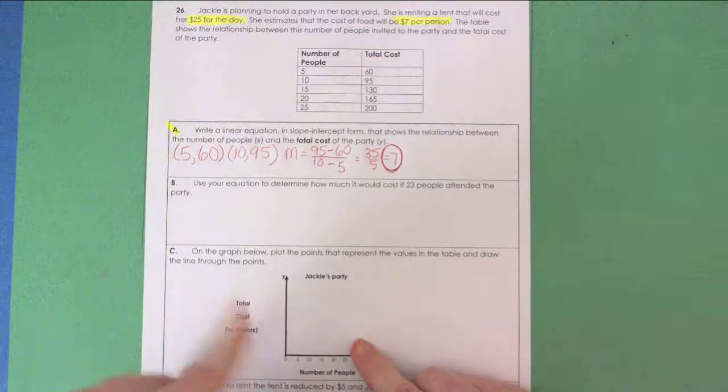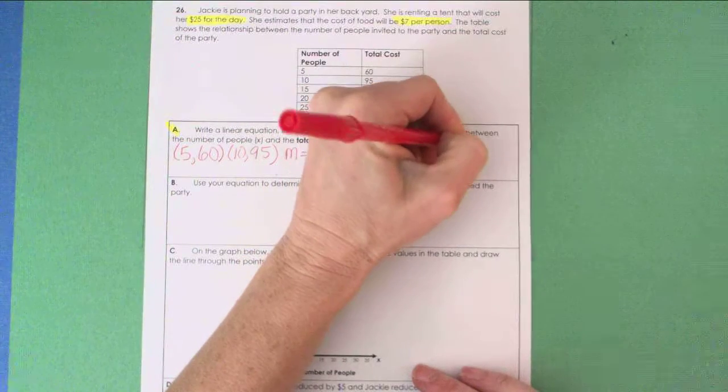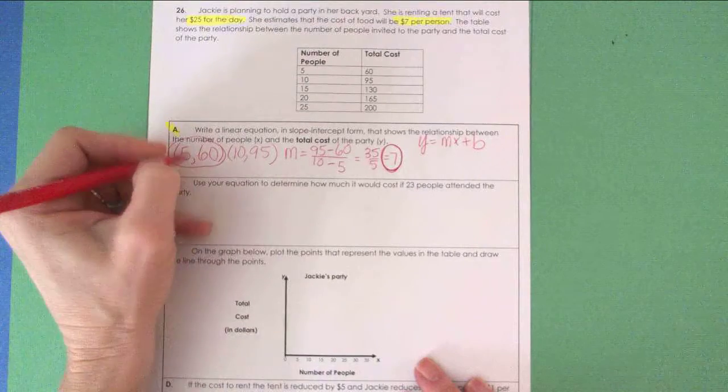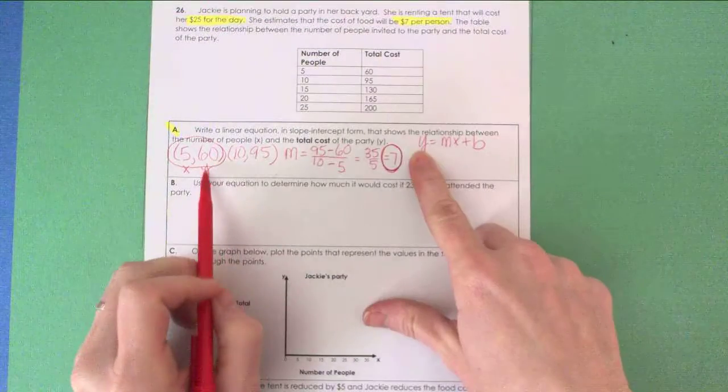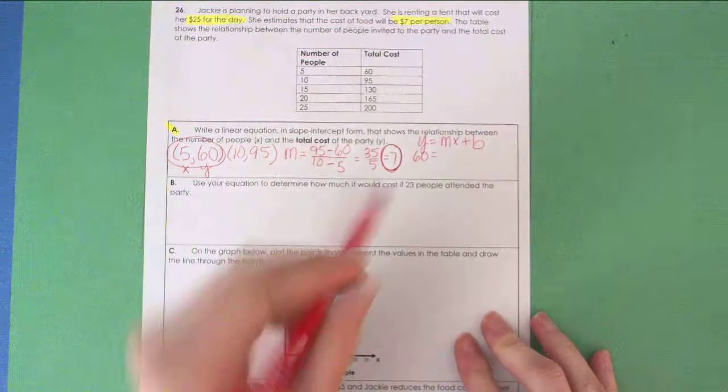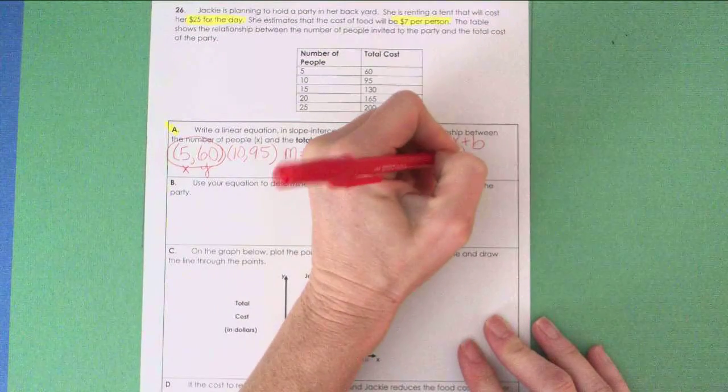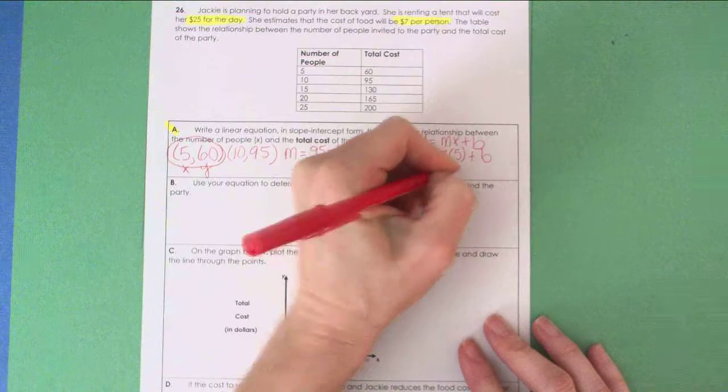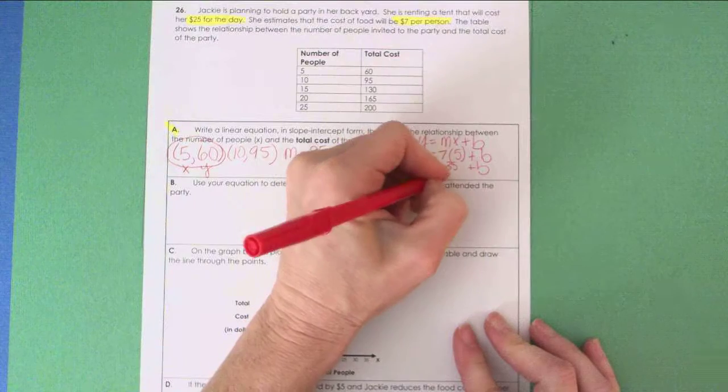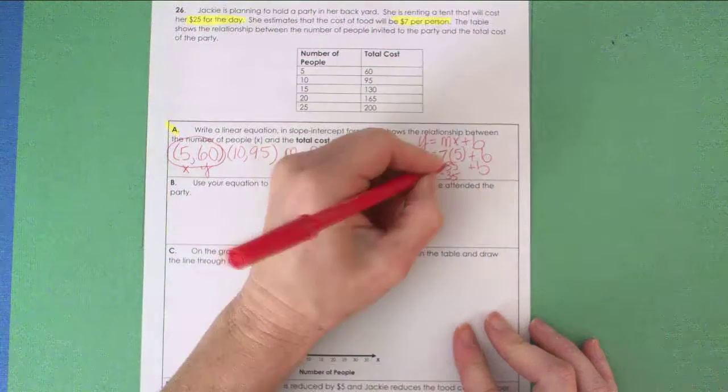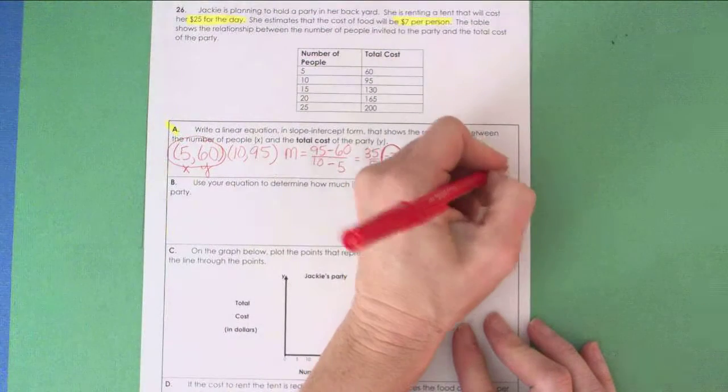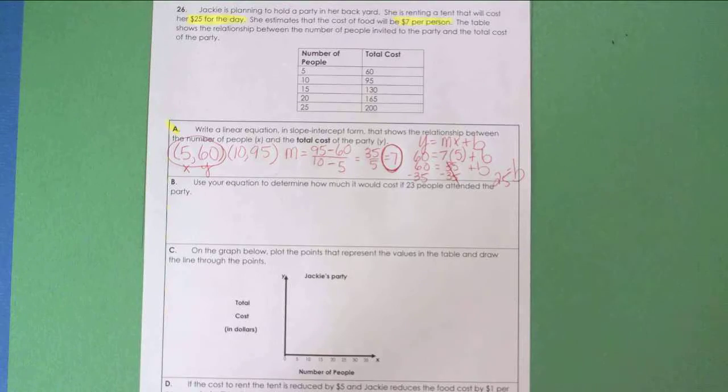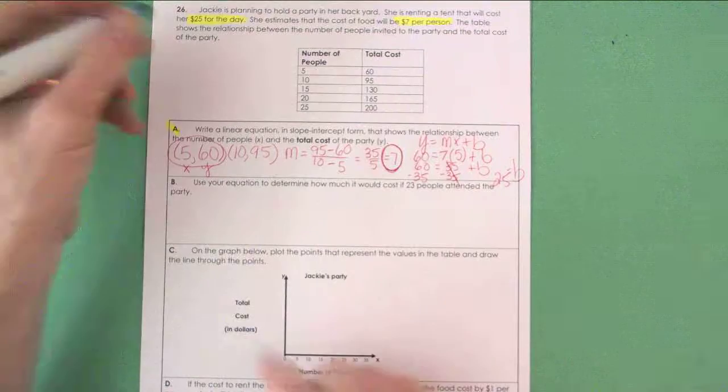To get my B in Y equals MX plus B, I'm going to substitute 7 for M, and I'm going to choose this first ordered pair for my X and Y. So for Y, I'm going to substitute 60, 7 for slope, 5 for X, and plus B. Solving for B, I have 60 equals 35 plus B. I'll subtract 35 from both sides, which is going to cancel these out. 60 minus 35 is 25, so B is equal to 25.